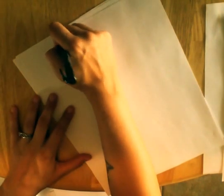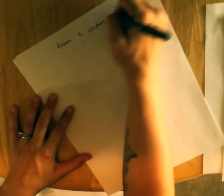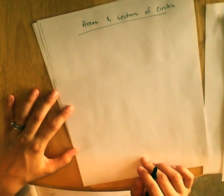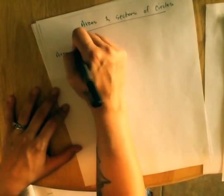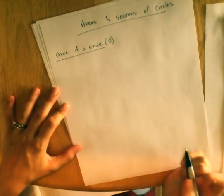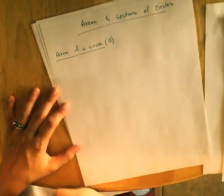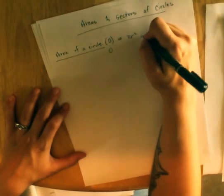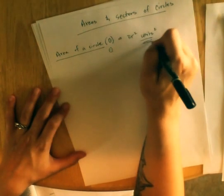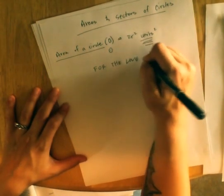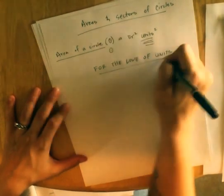The next section we have is areas and sectors of circles. I hope we know this by now. The area of a circle. I often denote a circle as a circle with a dot in the center. The reason I put the dot in the center is so that it doesn't just look like an O. The area of the circle I hope we know is pi r squared, units squared. Don't forget your units. If you had me last year you heard this saying, for the love of units.